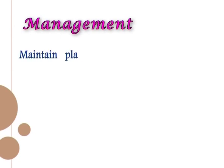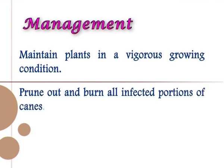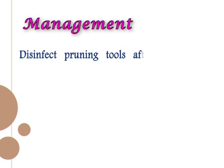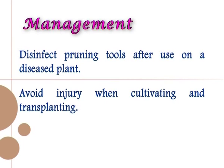The disease can affect any part of the stem, initially producing yellow or red spots on the bark, which enlarge into brown cankers with dark margins; the bark cracks and becomes sunken. Management: maintain plants in a vigorous growing condition. Prune out and burn all infected portions of canes. Disinfect pruning tools after use on diseased plants. Avoid injury when cultivating and transplanting.